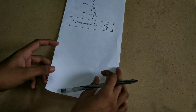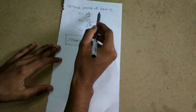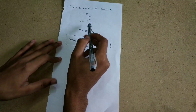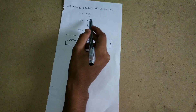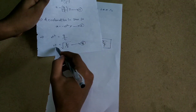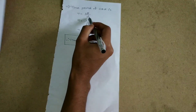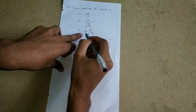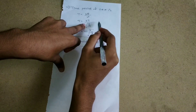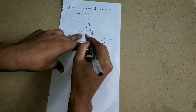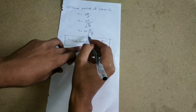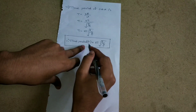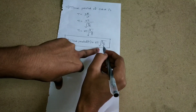The time period of simple harmonic motion is T equals 2 pi divided by omega. Substituting omega equals root of g by L, we get T equals 2 pi divided by root of g by L, which equals 2 pi times root of L by g. Therefore, the time period of a simple pendulum is T equals 2 pi times root of L by g.